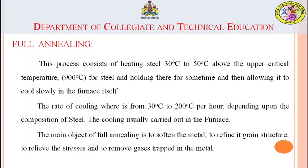In full annealing, it consists of heating the steel 30 to 50 degrees Celsius above the upper critical temperature, holding there for some time, and then allowing it to cool slowly in the furnace itself. In process annealing the temperature is below the critical temperature, whereas in full annealing the steel is heated above the upper critical temperature.